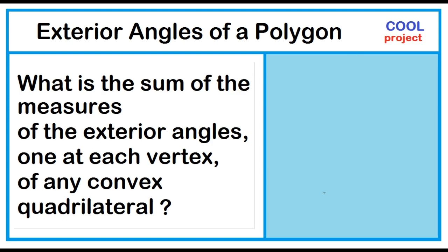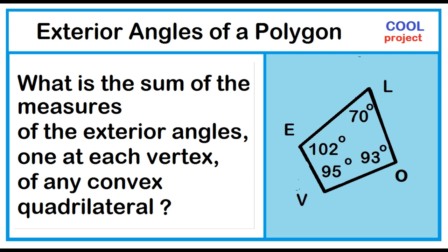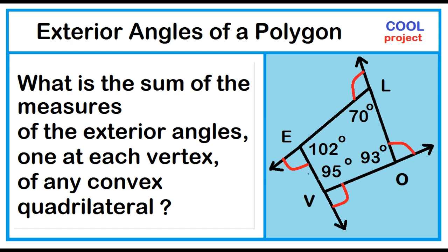How about quadrilaterals? What is the sum of the measures of the exterior angles, one at each vertex, of any convex quadrilateral? In this quadrilateral, angle L measures 70 degrees, angle O is 93 degrees, angle V is 95 degrees, and angle E is 102 degrees. The four sides are segment LO, segment OV, segment VE, and segment EL. Let's extend the sides of this quadrilateral to form exactly one exterior angle at each vertex.